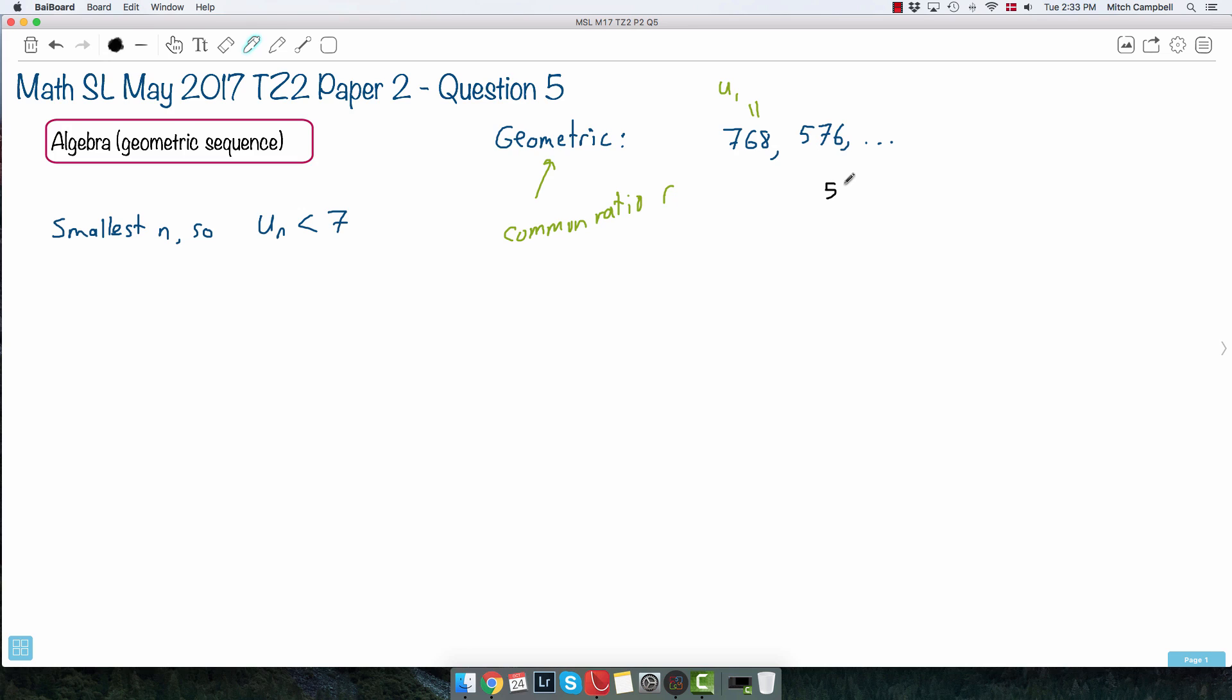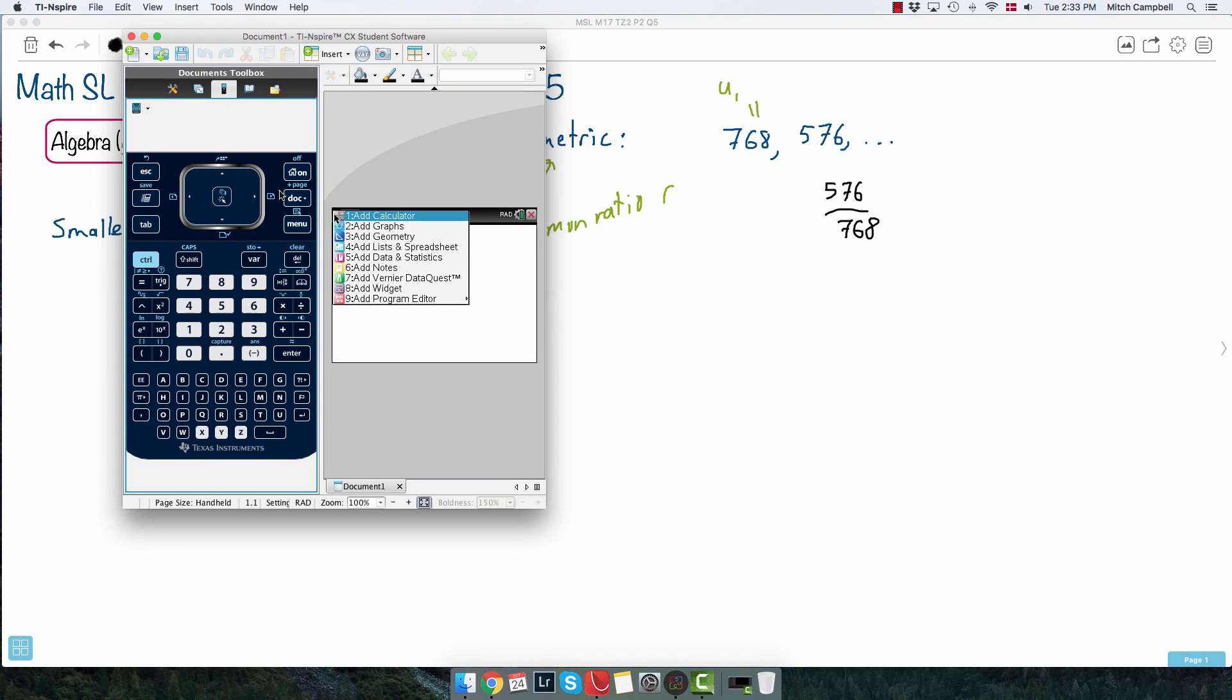So, for example, I could do 576 divided by 768. I could do that on my trusty old calculator here. So I'll press the home button, I'll press calculator, and I can do this. So 576 divided by 768.